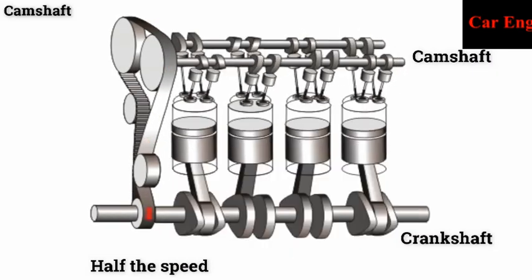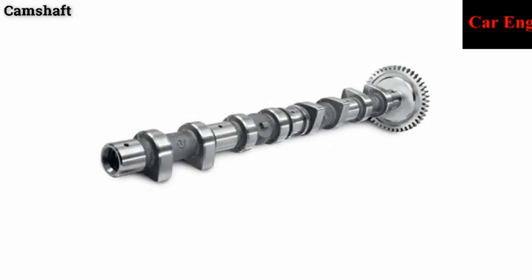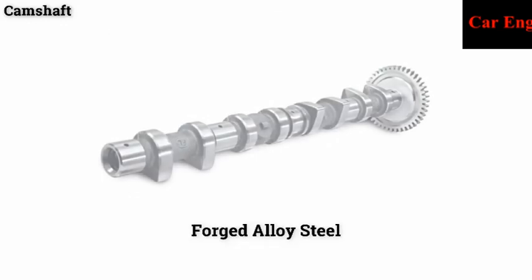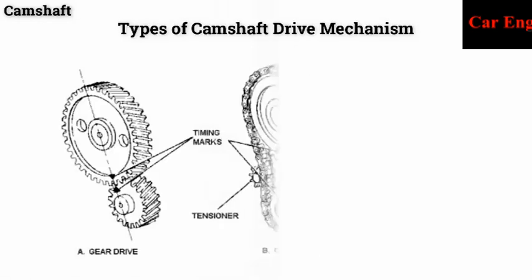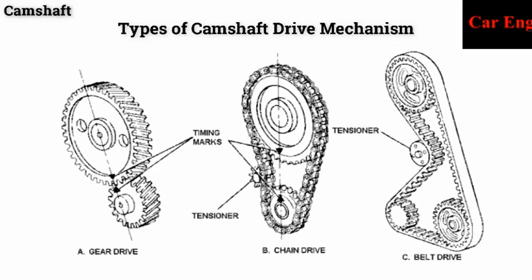Camshafts are made from forged alloy steel. There are three types of camshaft drive mechanisms: gear drive, chain drive, and belt drive.